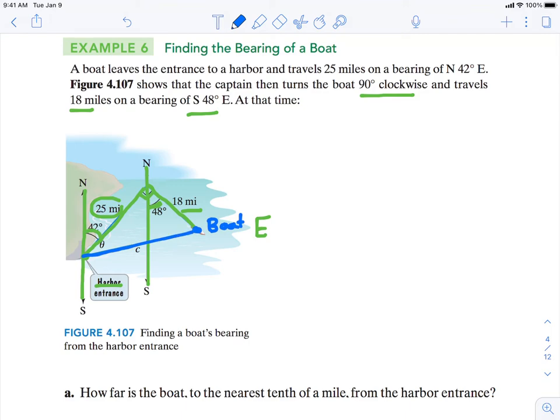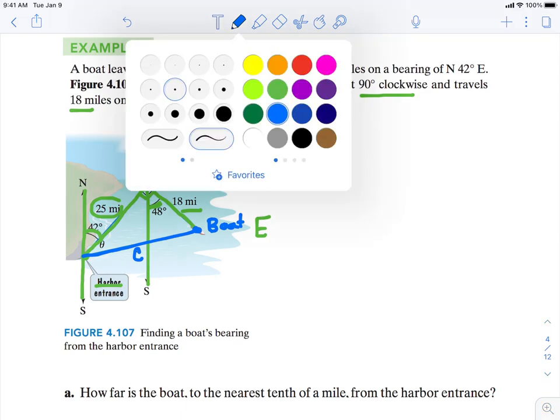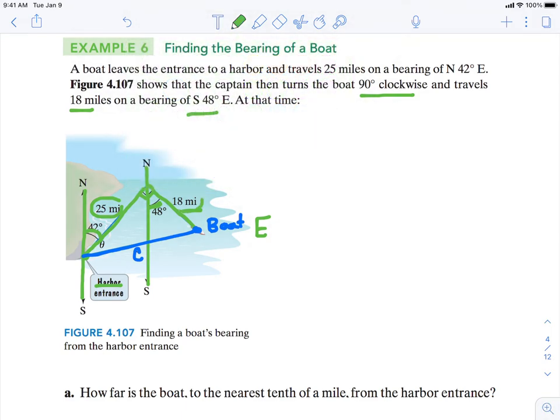Well, the boat's distance is represented by the length C in the figure. We do know the other two sides in the right triangle. So we can use the Pythagorean theorem.